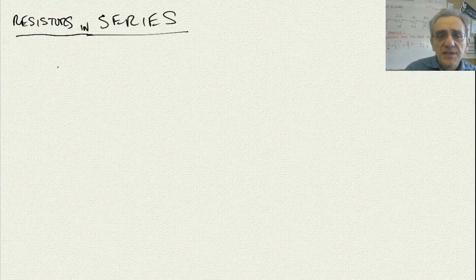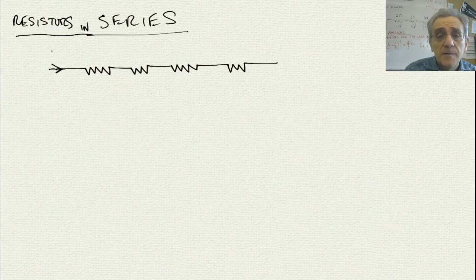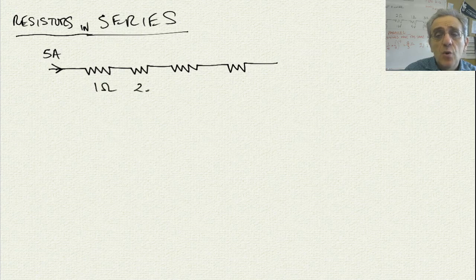If we have resistors in series, they look like this. And if we have a current flowing down this wire — let's say we have 5 amps — and we have a 1 ohm resistor, a 2 ohm resistor, a 3 ohm resistor, and another 2 ohm resistor.